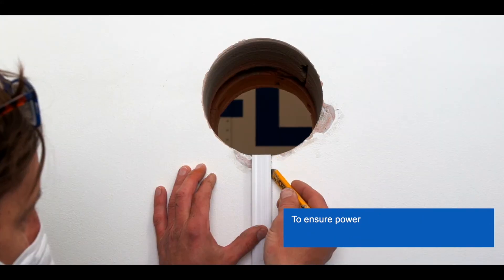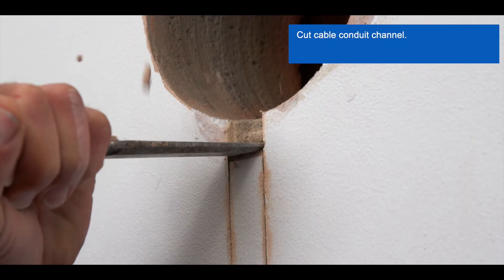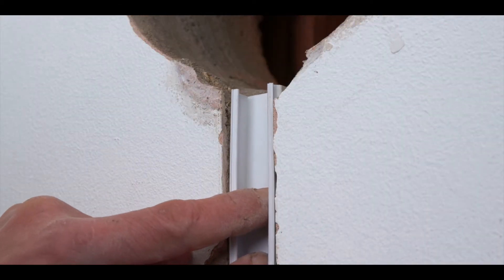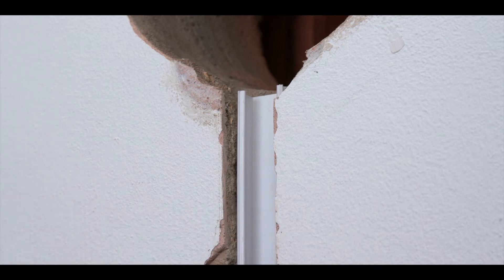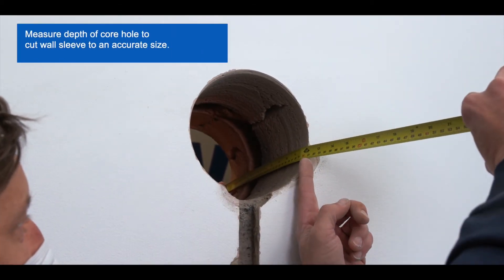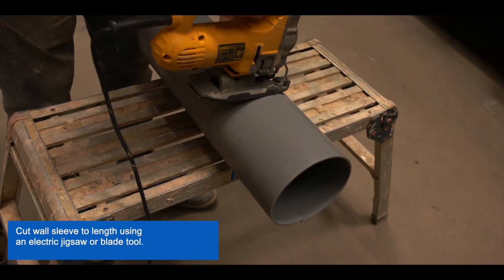To ensure power and connection to the unahab controller, a cable will need to be installed. For installation in a new build, this cable should already be pre-installed. Measure the depth of the core hole and cut your wall sleeve to the correct length. We recommend using an electric jigsaw or blade tool.